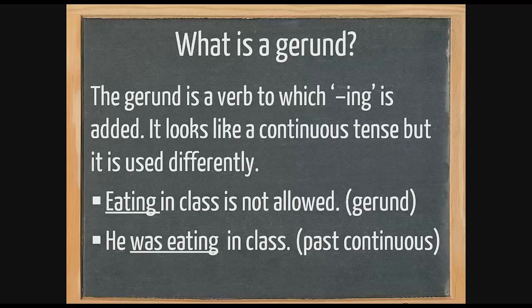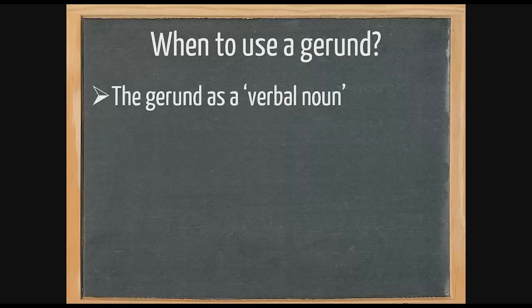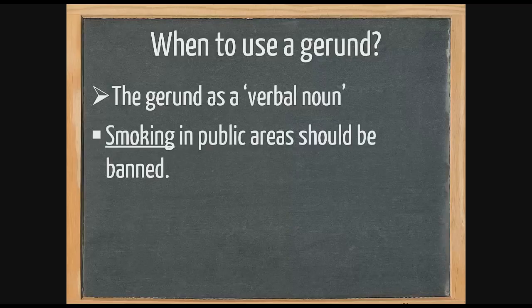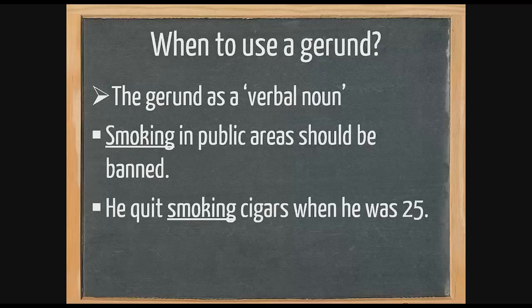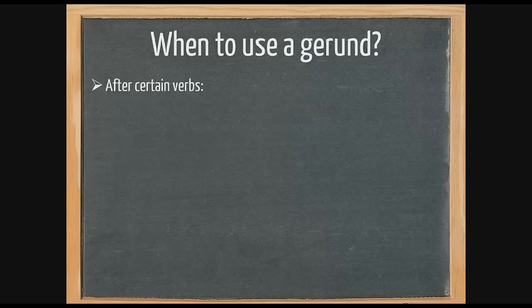We use the gerund most often as a verbal noun — a noun that looks like a verb. For example, 'Smoking in a public area should be banned': we take the verb 'to smoke,' add -ing, and it becomes the subject. In 'He quit smoking cigars when he was 25,' 'smoking' is the object. We also use the gerund after certain verbs.